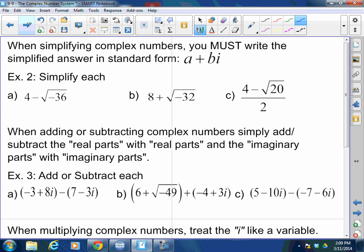When simplifying complex numbers, you must write the simplified answer always in standard form. Standard form, when you have numbers and imaginary units together, must always be a plus or minus bi. The real part first, plus or minus the imaginary part. So don't stress. You know how to do this. This is 4 minus the square root of negative 36. What's the square root of 36? So this is minus 6i. Done.